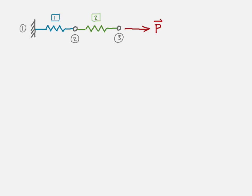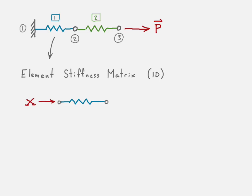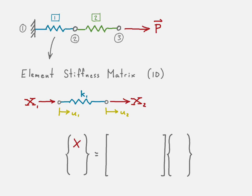If we go ahead and take a look at that problem again — two springs in series — and we create our elemental stiffness matrix for element one in one dimension, which is what we might be familiar with at this point: there are our forces and displacements at each node, our stiffness. We just have one degree of freedom at each node, there are our forces, our displacements, and here is our stiffness matrix.